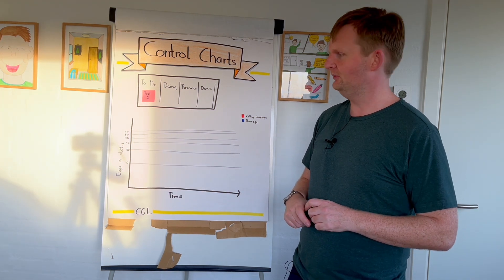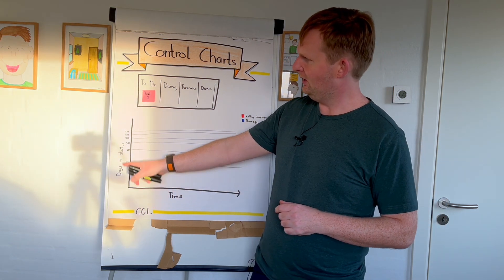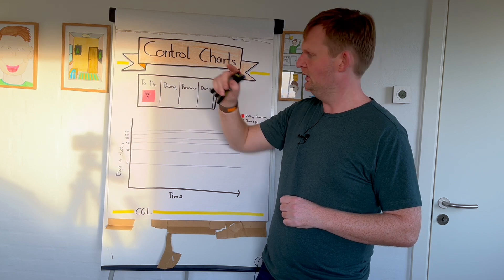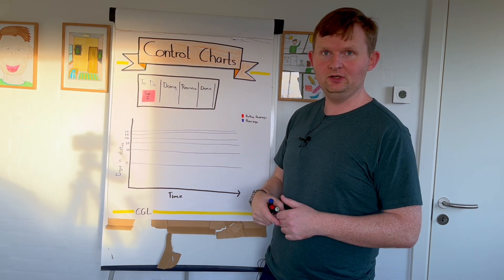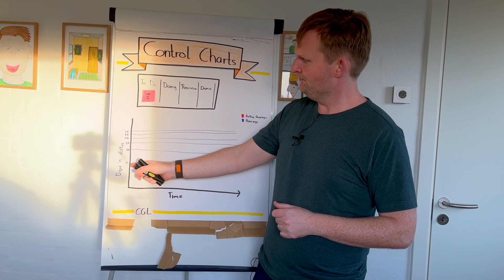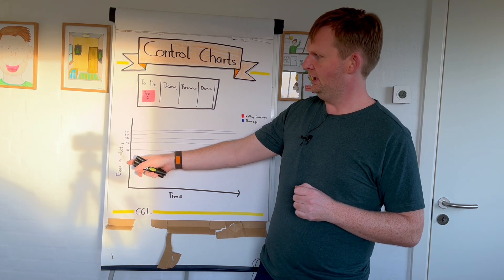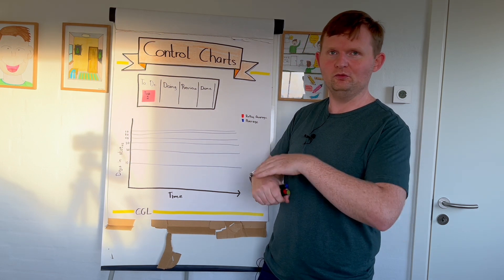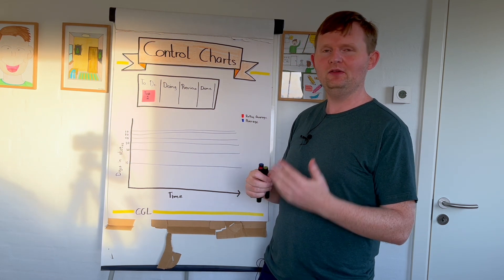And then we have on the y-axis, how many days have we been in a specific status or has an issue been in a specific status. And this is often a logarithmic scale just to make it easier to see what is happening.